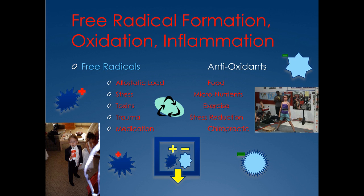The accumulation of free radicals is called our allostatic load. That jagged pointed little molecule with the red plus represents a free radical — I call them mayhem, like the insurance commercials. That positive charge hurts us; we like negative charge or neutral in our body. It's really an unpaired electron, and whatever it touches or comes in contact with in the body, it will take an electron from healthy tissue and healthy cells, causing damage. That's our allostatic load.